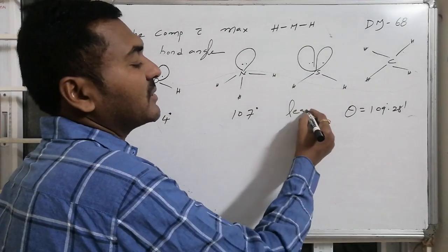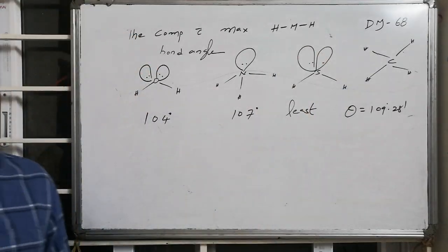It is very least, and out of these four, the least bond angle is maintained for H2S.